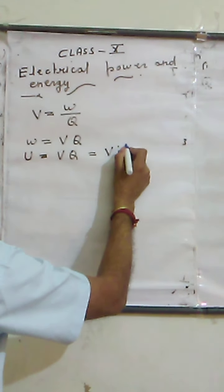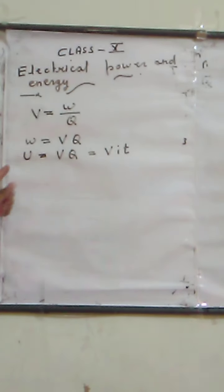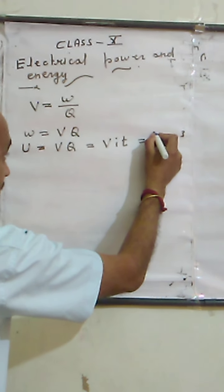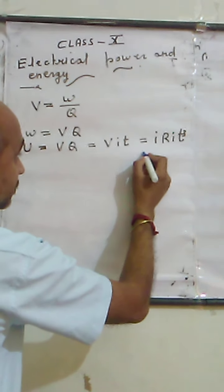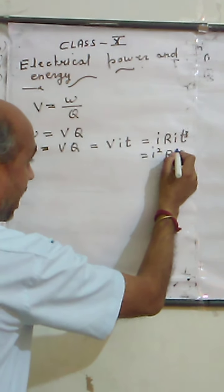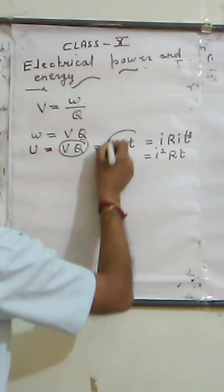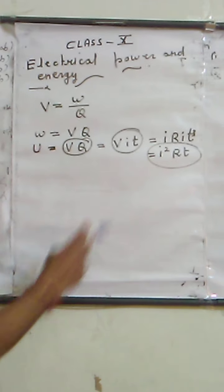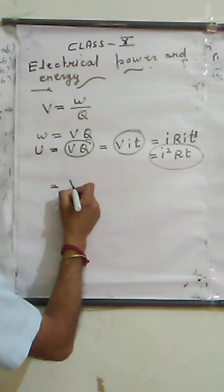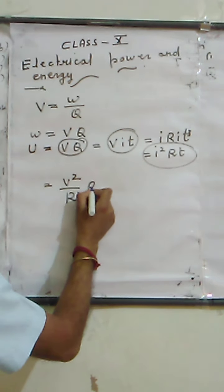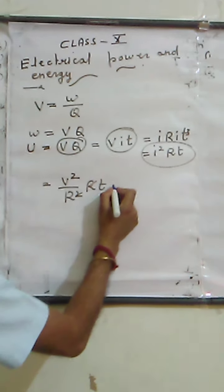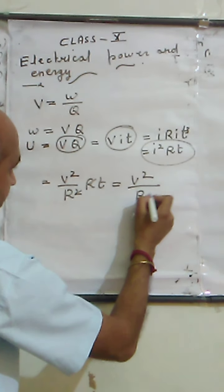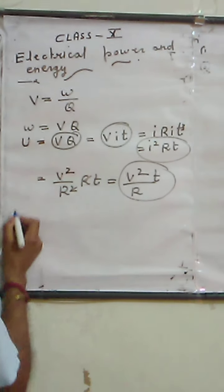We can change this relation in another mathematical way. In place of Q we write It, so we get U equals VIt. In place of V we can write IR, so another formula we get: U equals I²Rt. Also, in place of I we can write V upon R, so substituting: U equals V²t/R, with R cancelling out.